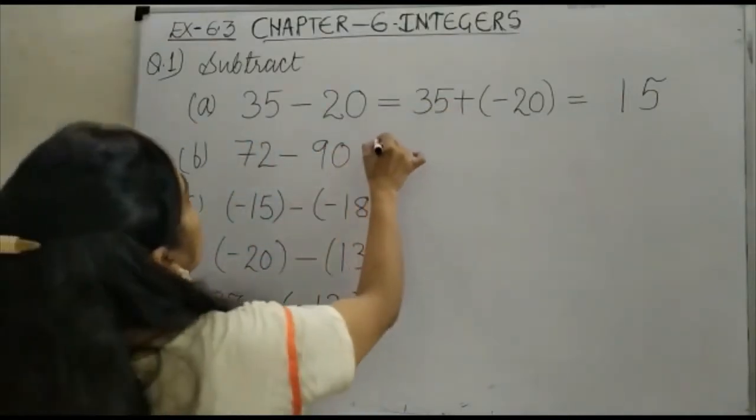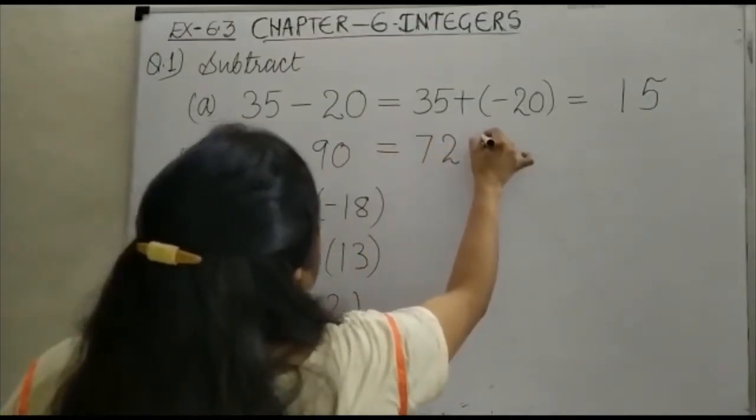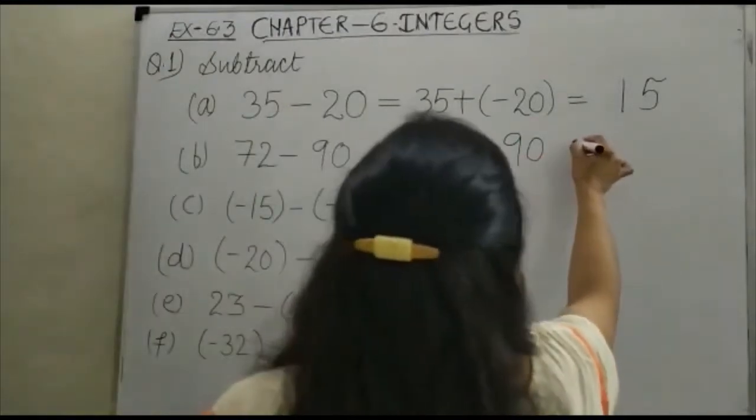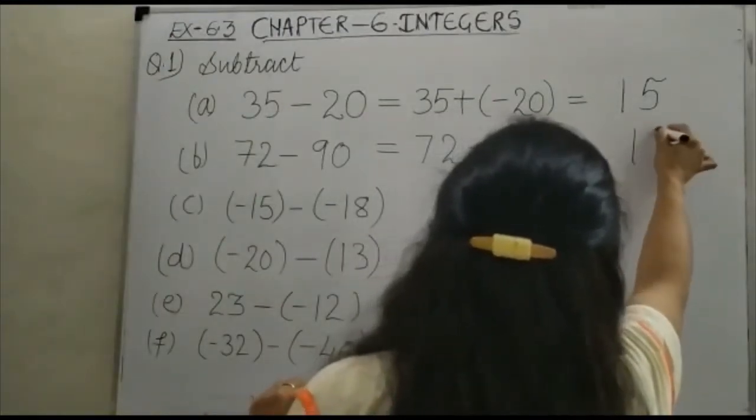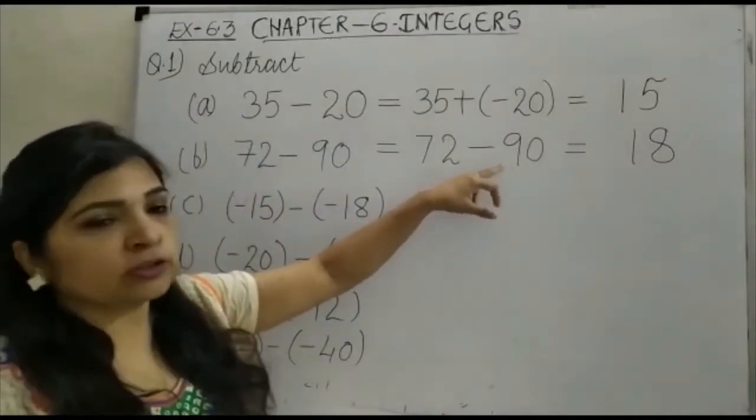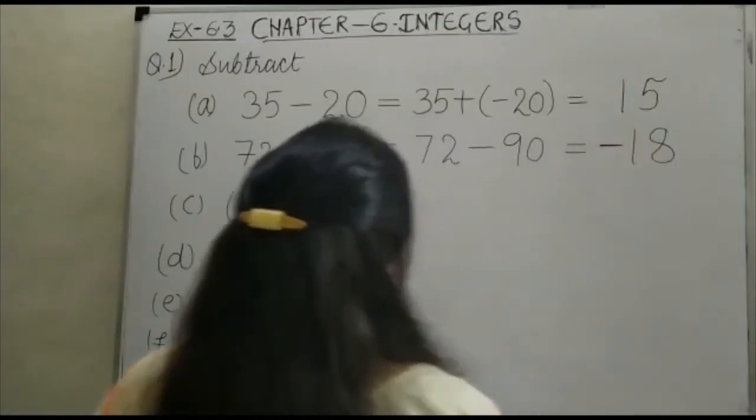When you come to the next one, it is again 72 minus 90. Once again, plus and minus will be minus and this will be your 18. But this time your 90 is bigger and what is the sign of 90? Minus. So this will be your minus 18.